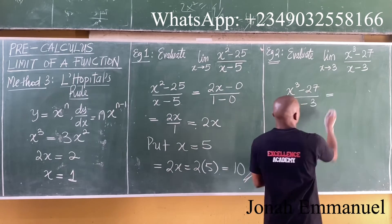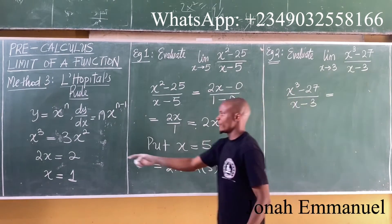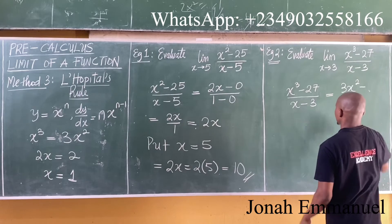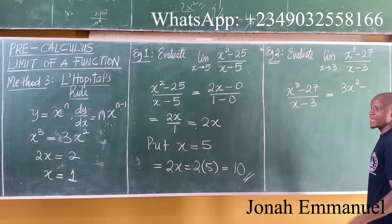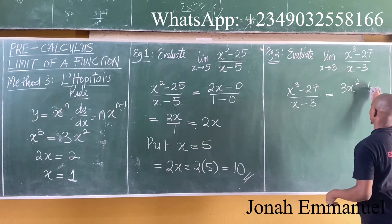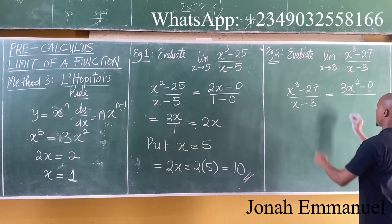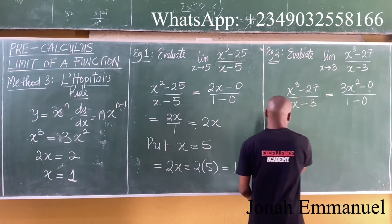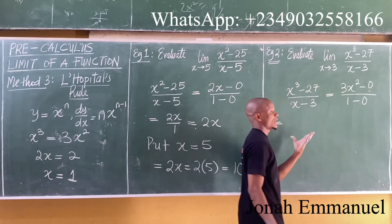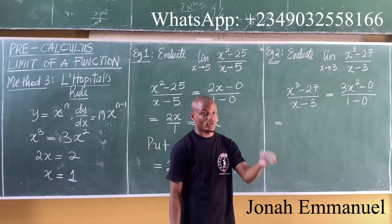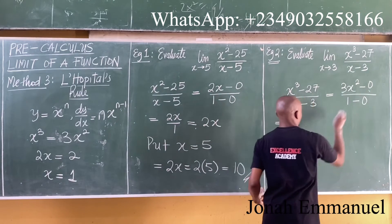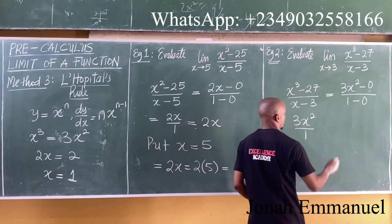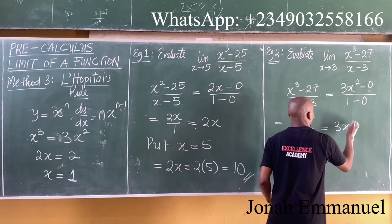If I differentiate x cubed, we get 3x squared. The constant 27 differentiates to 0, giving 3x squared in the numerator. Differentiating x gives 1 and differentiating 3 gives 0, so the denominator becomes 1. This simplifies to 3x squared.